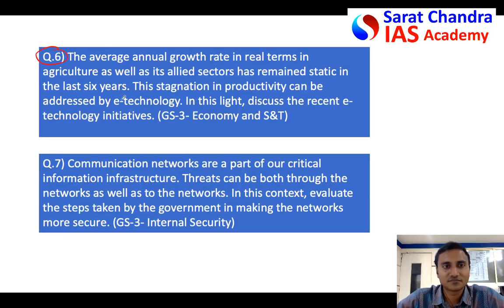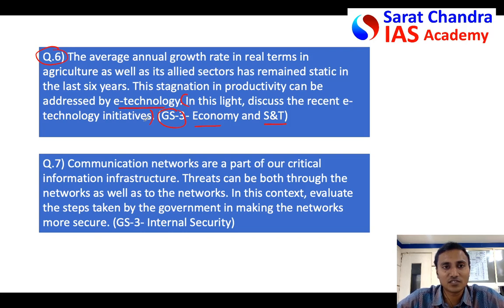The sixth question talks about agriculture and how e-technology can be used in agriculture. It falls under Economy and Science & Technology in GS Paper 3. The question has two statements followed by the actual question, so 70 to 80 percent of your answer should be on the last part. You need two or three lines to emphasize the statements given.